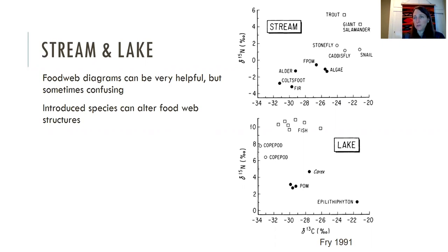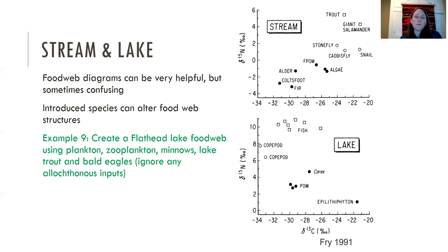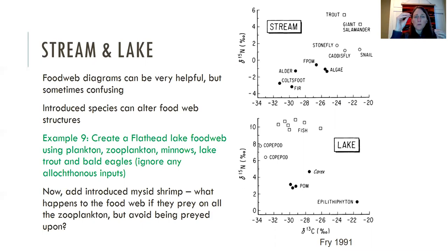Then you can also study what happens when you introduce a new species to a food web. It can change the whole structure. So you could create what's kind of a classic study, Flathead Lake food web, if you have plankton, zooplankton, minnows, lake trout, and bald eagles, okay? So you can ignore allochthonous inputs in this case. And then add mysid shrimp, which are a big invertebrate that feed on the zooplankton, but then they migrate vertically during the day to avoid being preyed on by the fish. So how would that change the food web? That would be example number nine.